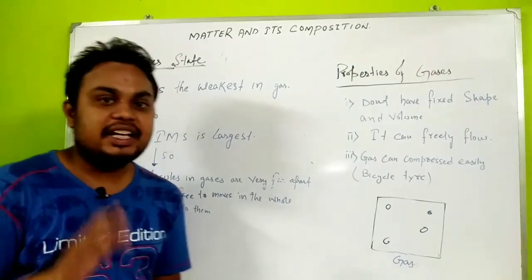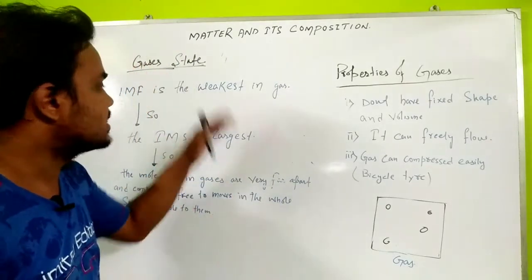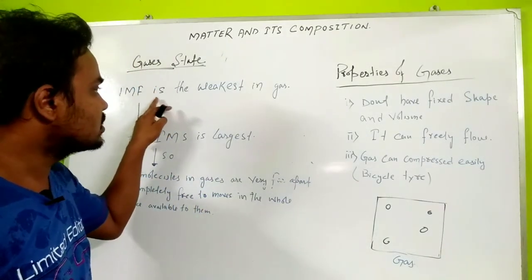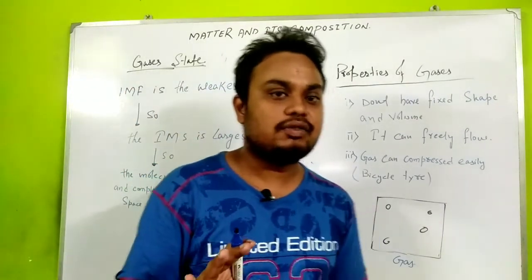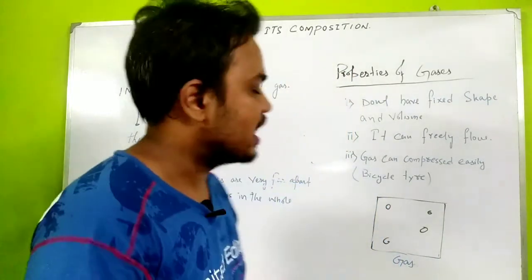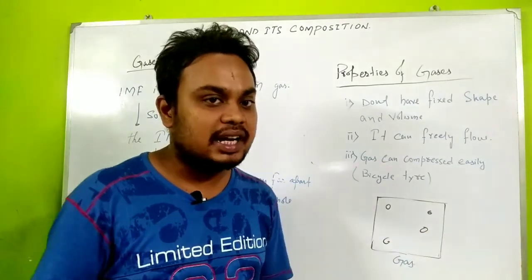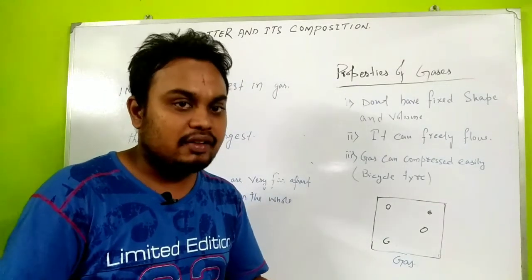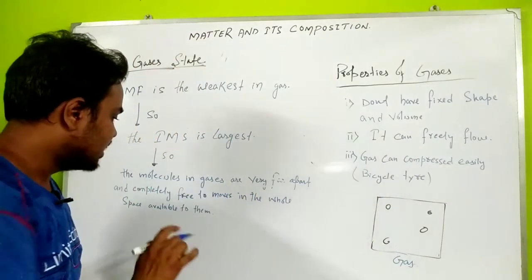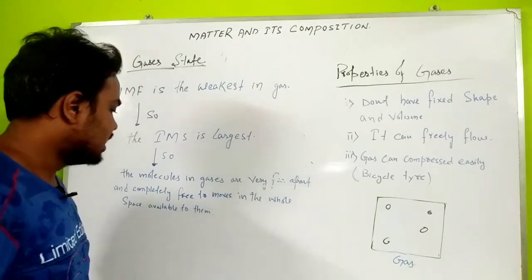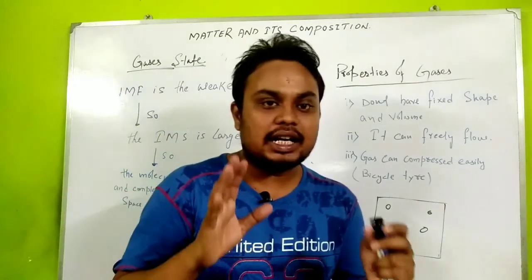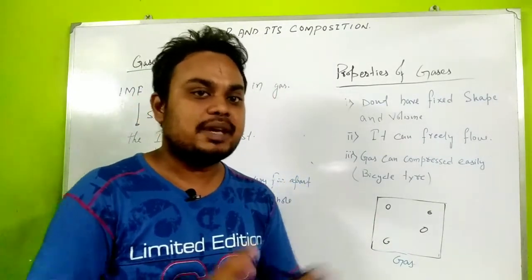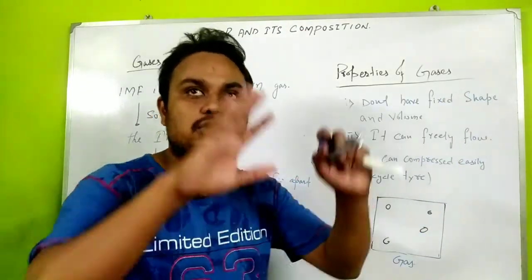Now the properties of gas: the intermolecular force of attraction is the weakest in gas. The intermolecular space is the largest. Since the force is weak, the space between molecules increases greatly. The molecules in gas are very far apart and are completely free to move in the whole space available.